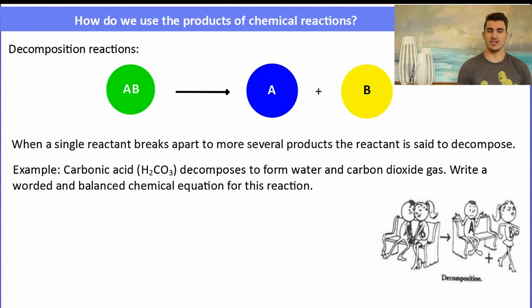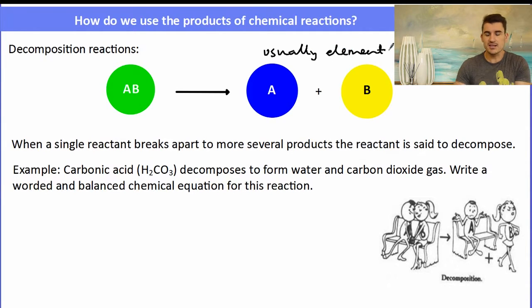A decomposition reaction: in a decomposition reaction, we have one reactant that breaks apart into two products. Usually, but not always, that one reactant will break apart into something plus an element. But it's when a single reactant breaks apart into a number of different products. That is a decomposition reaction. It decomposes.